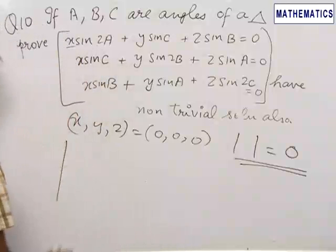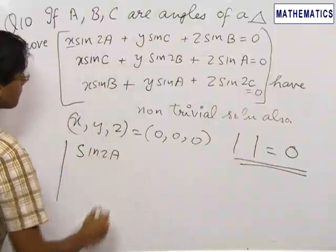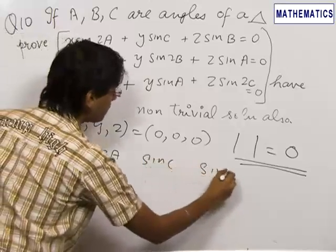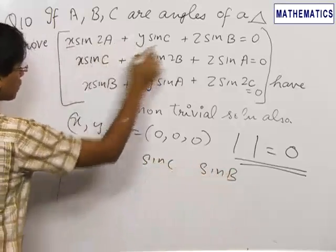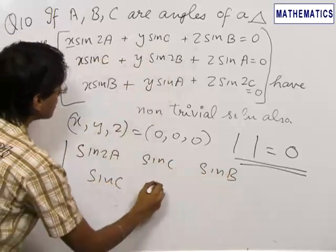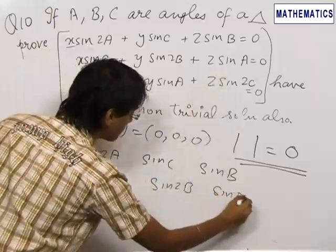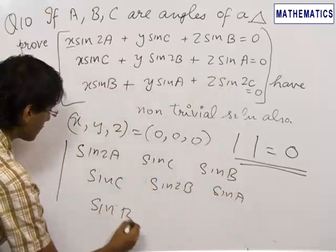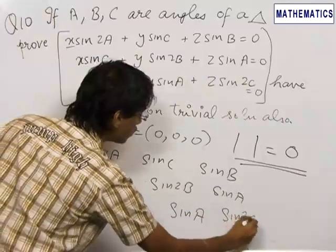The determinant will have entries: sin 2A, sin C, sin B in the first row — these are the coefficients of x, y and z in the three equations. The second row is sin C, sin 2B, sin A, and the third row is sin B, sin A, sin 2C.